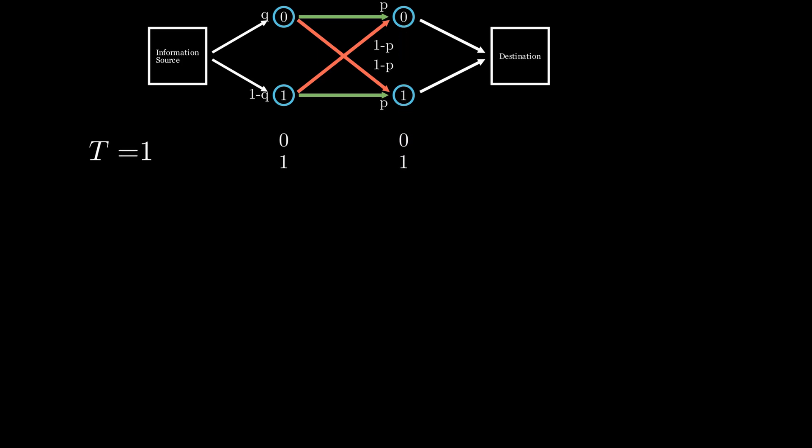The idea of an extended channel is that we use our channel to send multiple messages, and encode and then decode a block made out of them. Here, the number of symbols that form that block is denoted by capital T.